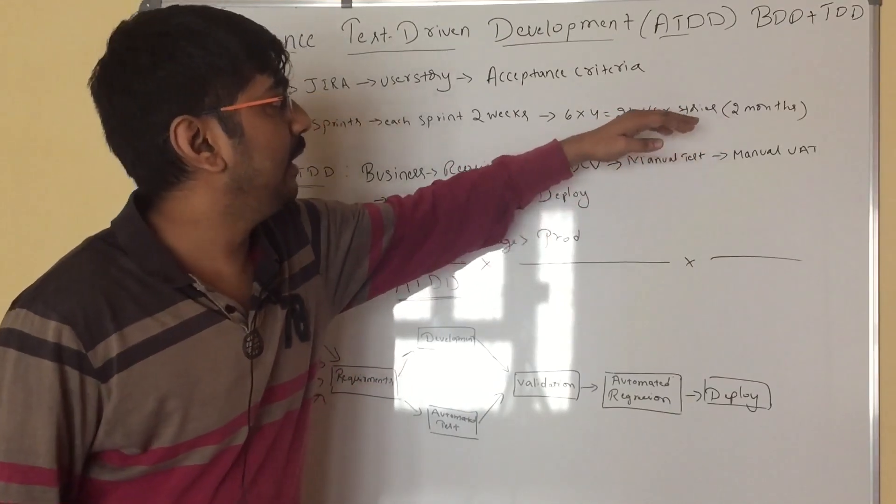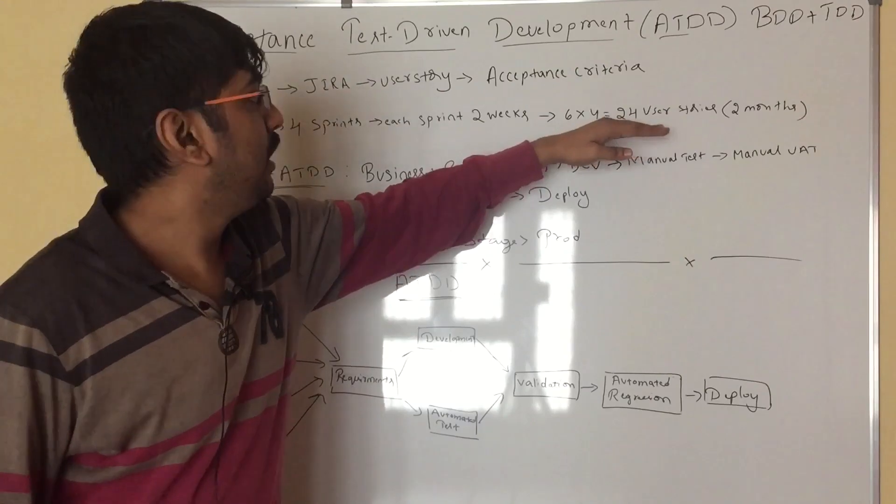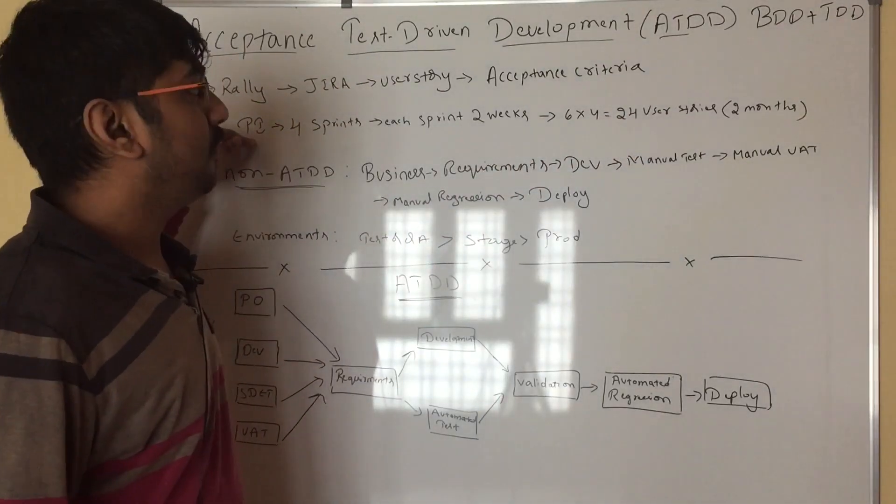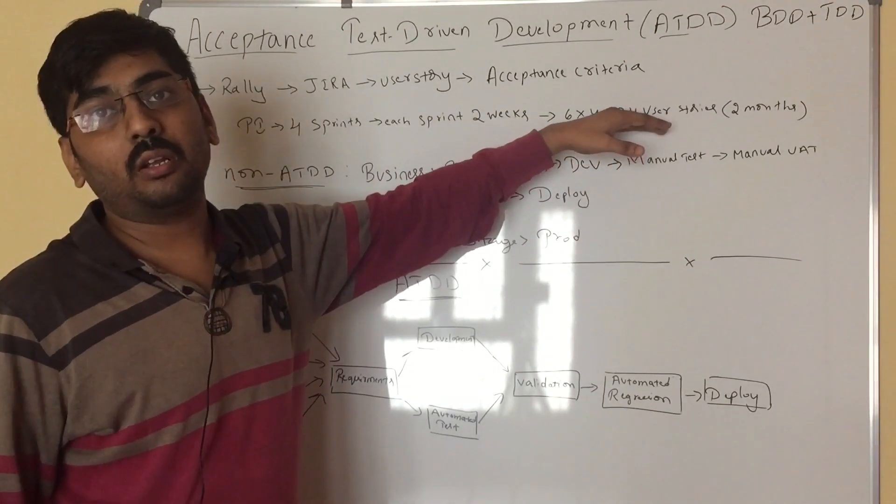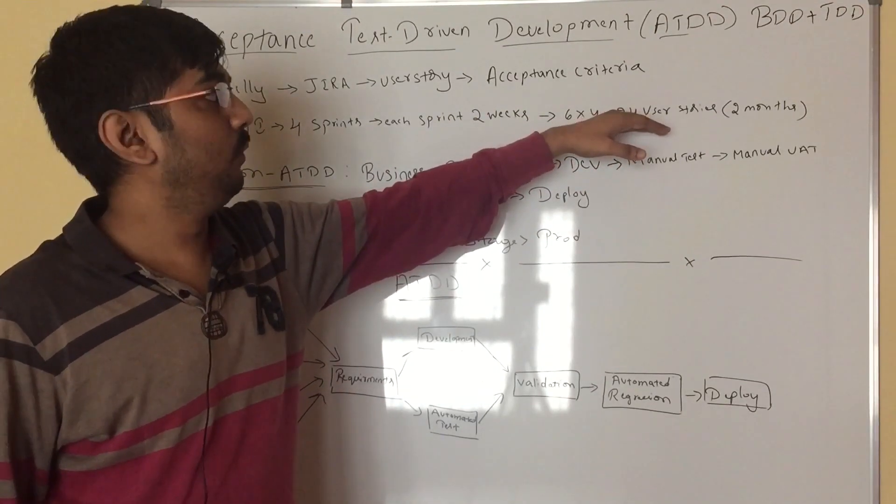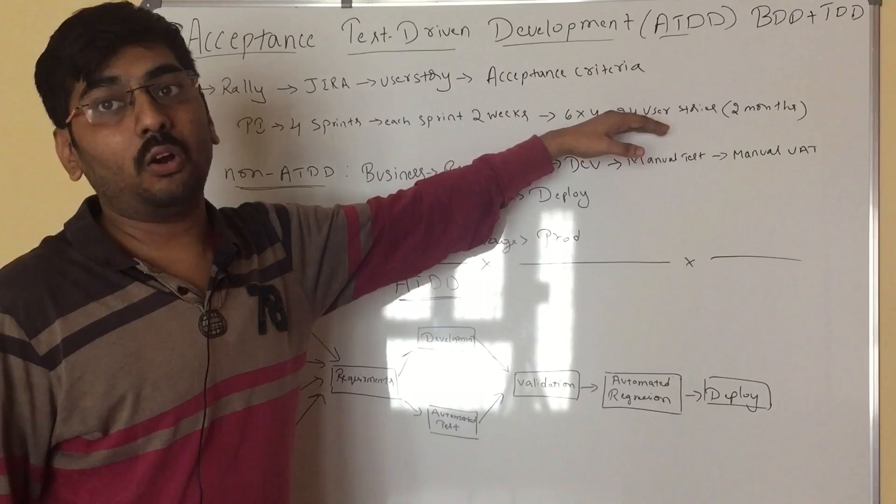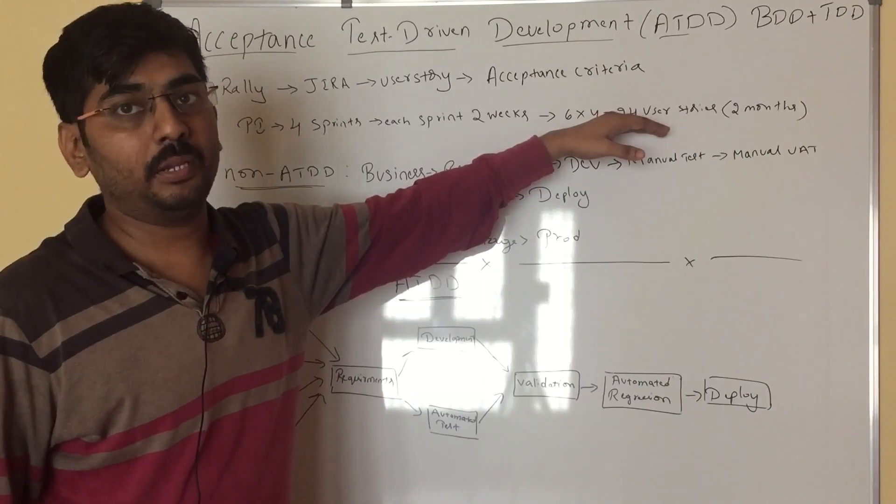If it is like four to five PIs, it will be around 100 user stories. Approximately 100 user stories you are going to test manually. And a lot of regression efforts also you will be keeping.